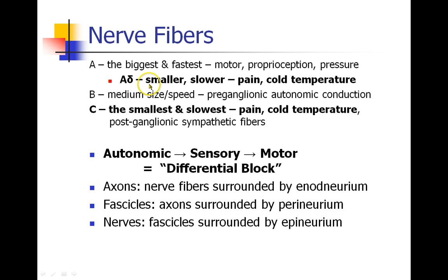The A delta fibers, while part of the A fiber group, tend to be more like C fibers — they're smaller, slower, and also transmit pain. The phenomenon we're trying to understand is called a differential block: different nerve fibers get blocked more or less easily when exposed to local anesthetic. Autonomic fibers are blocked first, followed by sensory block, and only then does motor block occur. Recovery occurs in the opposite direction, with the block receding in reverse order.